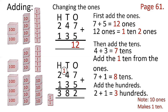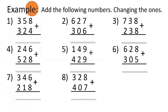Okay, example — add the following numbers changing the ones. Number 1: 8 plus 4 is 12, bring down 2, carry 1 to the tens place. 5 plus 2 is 7 plus 1 is 8 in tens. 3 plus 3 is 6 in hundreds — answer is 682. Number 2: 627 plus 306 — 7 plus 6 is 13, bring down 3, carry 1. 2 plus 0 plus 1 is 3. 6 plus 3 is 9. Answer is 933.